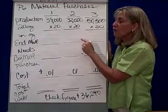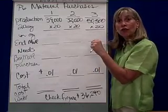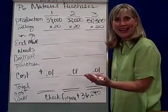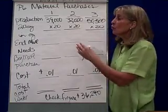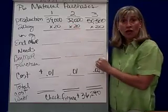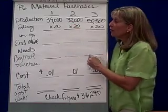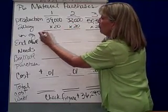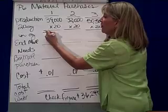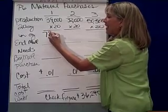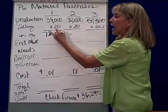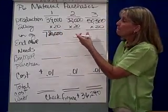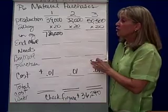That will give me in ounces how much water I need to meet my production needs. So 20 times 39,000 means we need 780,000 ounces in the first quarter for production.